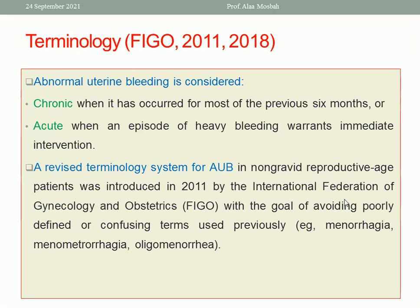A revised terminology system for abnormal uterine bleeding was suggested by FIGO in 2011. The goal was to avoid poorly defined or confusing terms used previously, like menorrhagia — meaning excessive or prolonged menstruation — oligomenorrhea, irregular bleeding, and heavy menstruation. These expressions are no longer used. We now use the expression abnormal uterine bleeding and the PALM-COEIN classification system suggested by FIGO.